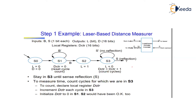We declare a 16-bit local register called d_counter to count time while the laser is traveling. Once the laser goes off, we start counting. We wait for the reflection; once it arrives, we stop counting. The d_counter must be initialized to zero back in S1 (initialization state), alongside laser off and d set to zero.